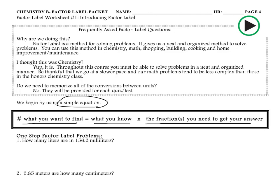The first problem asks you to convert 156.2 milliliters into liters. So what you want to find are liters, and you set that equal to the information you've been given: 156.2 milliliters. Some of you may already know that one liter equals 1,000 milliliters. If you don't, that's okay — find the common conversion chart at the very front of this packet. You will be provided with these conversion factors on the test, so you're not required to memorize them. You can always look back to the table.